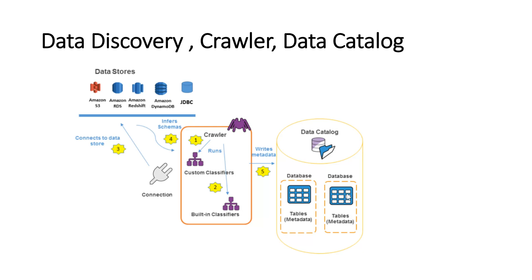Once the table is created in the Glue Catalog, you can start querying it as if it were structured data or any SQL database. You can connect these catalog tables to Athena, Redshift, and EMR, and then start querying this data as if it were any database. This is one of the most important features of AWS Glue — it helps you discover and explore your data without actually moving it from your source.